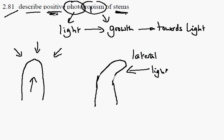So this is an example of positive phototropism: growth of the stem towards the light.